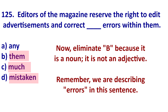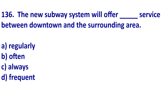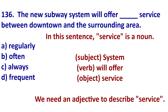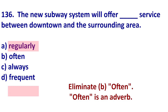It's very important you read the whole sentence. And let's look at 136. Here, 'service' is a noun — we're saying 'the subway system will offer service.' I offer an opinion, I offer a hand, but I need a noun after 'offer.' So I have a noun which is 'service,' and we probably need an adjective before that noun. So let's eliminate A: 'regularly' is an adverb — 'I regularly post lessons.' If it were 'regular,' it could be correct, but 'regularly' is an adverb.